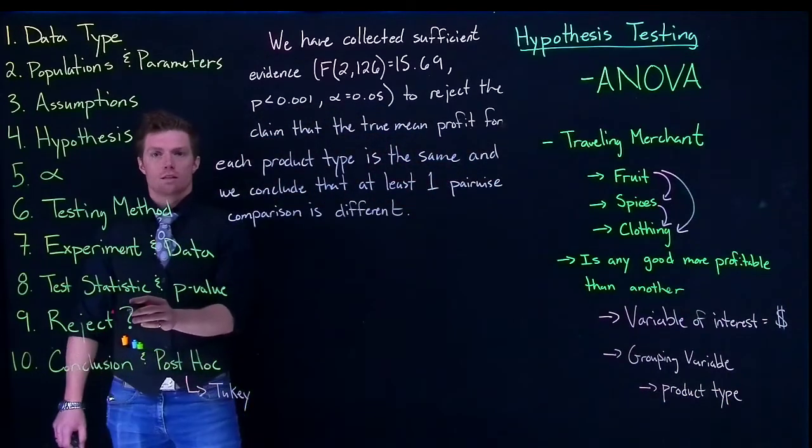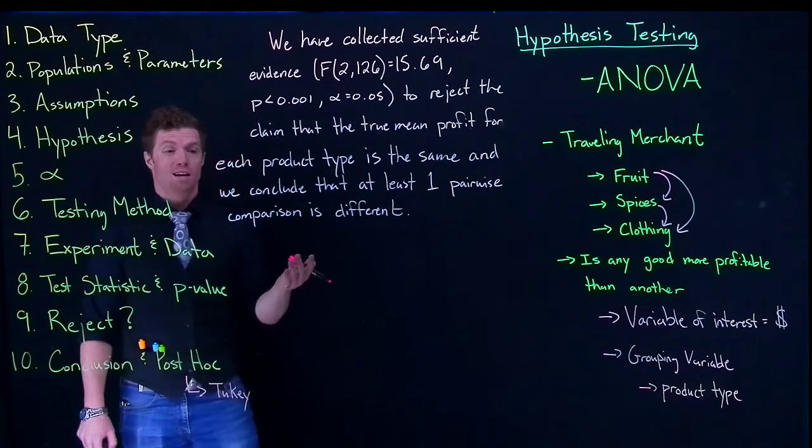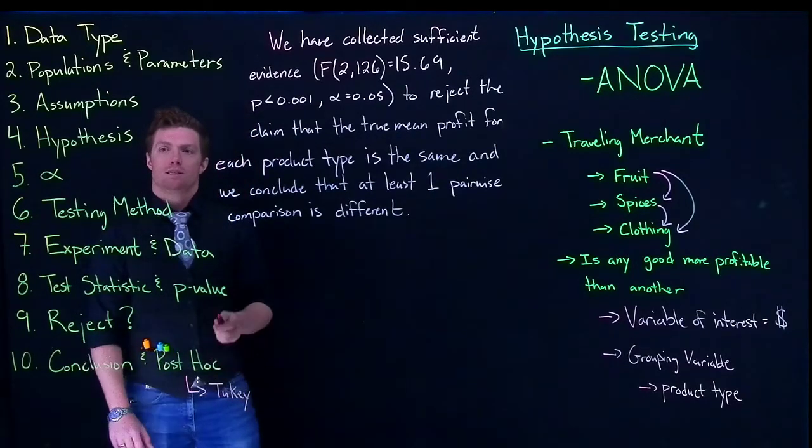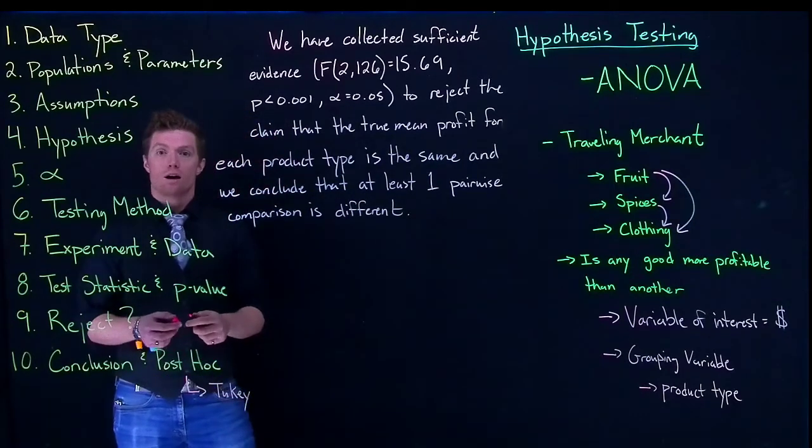Now, since we've rejected the null hypothesis, the next question is which one's different and maybe by how much? And that's where Tukey comes in. Because Tukey does the pairwise comparisons and gives us our confidence intervals.